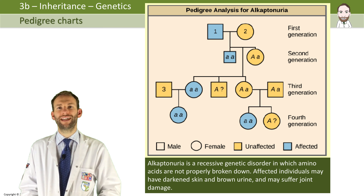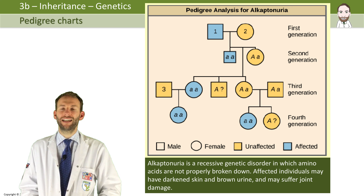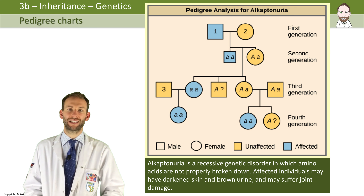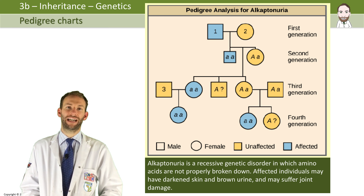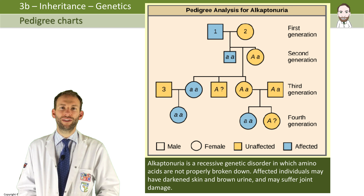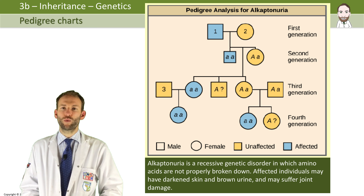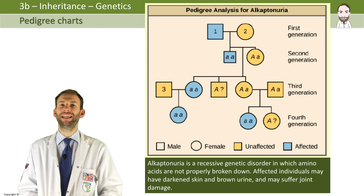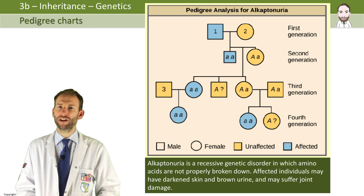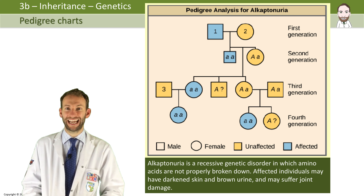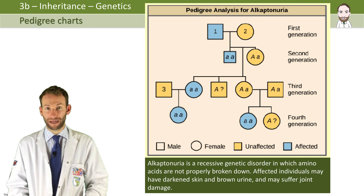Number one — well, we know they're affected. And if they're affected and it's a recessive disease, they must have two small a's because it's recessive. They had children with number two, and they had one child with the disease — little a, little a. So therefore, number two must have little a in order to pass it on to that child. So parent two must be big A, little a. We also know that they don't have the disease, so they can only either be big A, big A, or big A, little a. But looking at their children, we know it must be big A, little a.